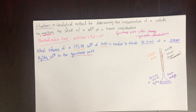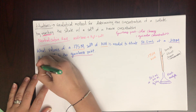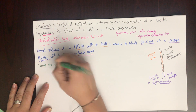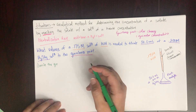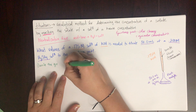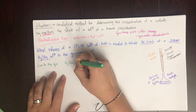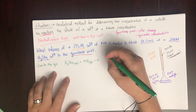Let's write out the steps to solve this problem. Step 1 is to write the balanced equation. The acid is H₂SO₄ (aqueous) and the base is potassium hydroxide, KOH (aqueous), producing water plus a salt.